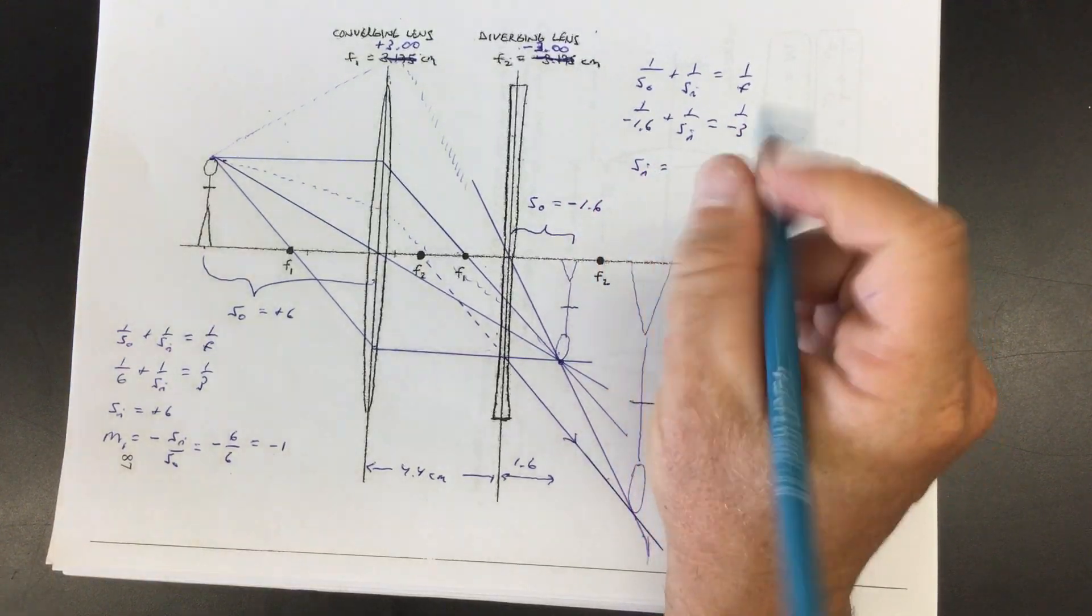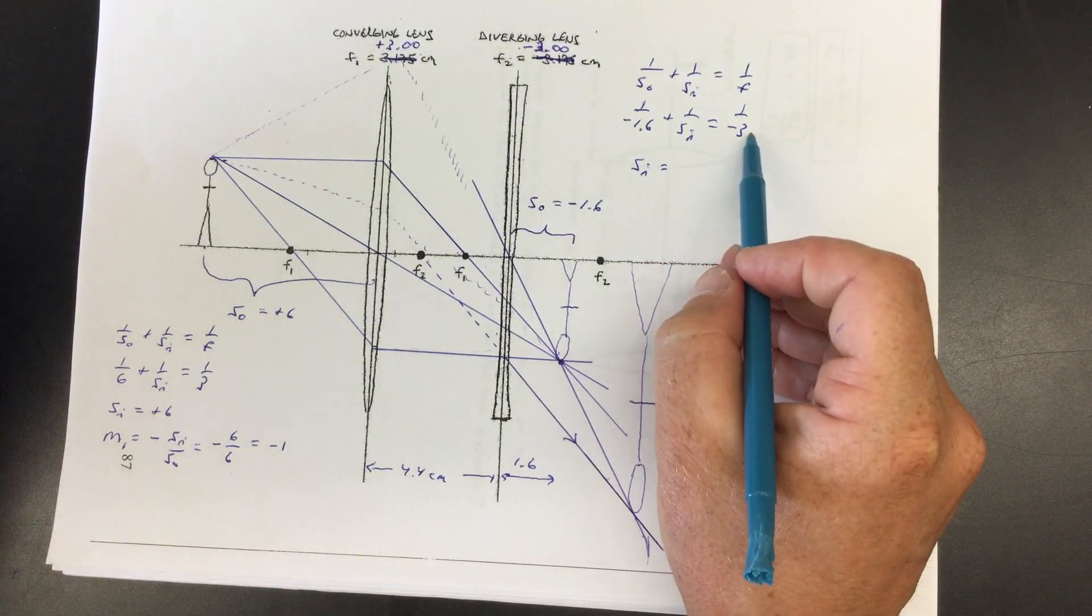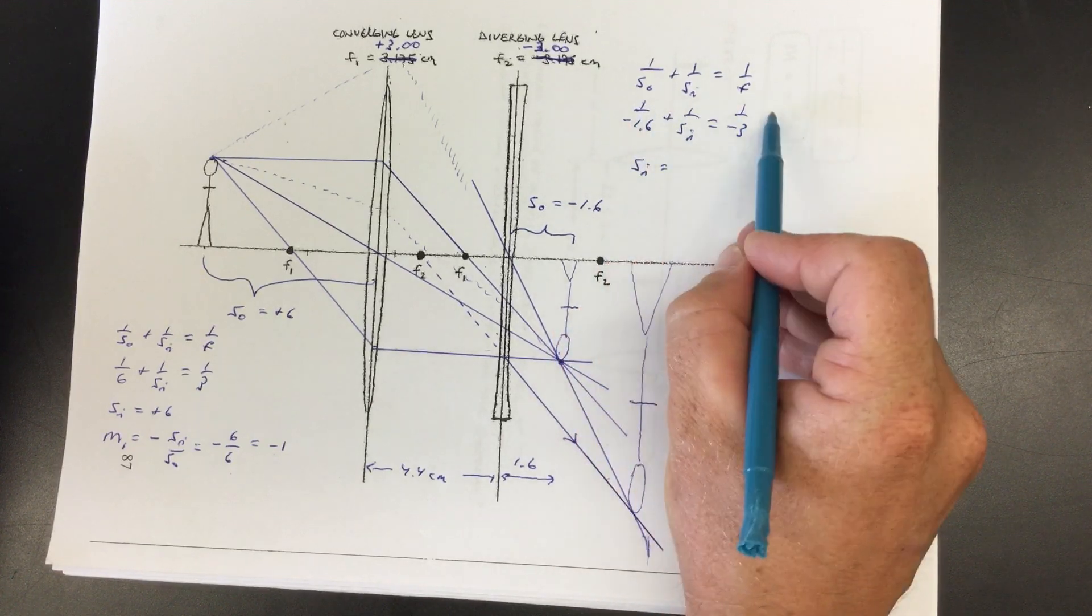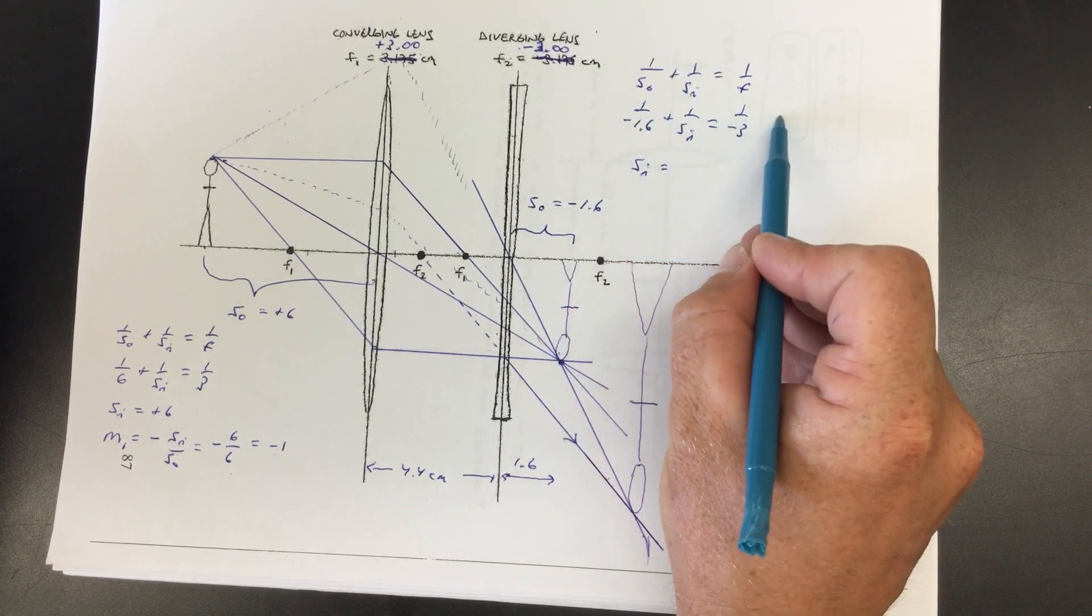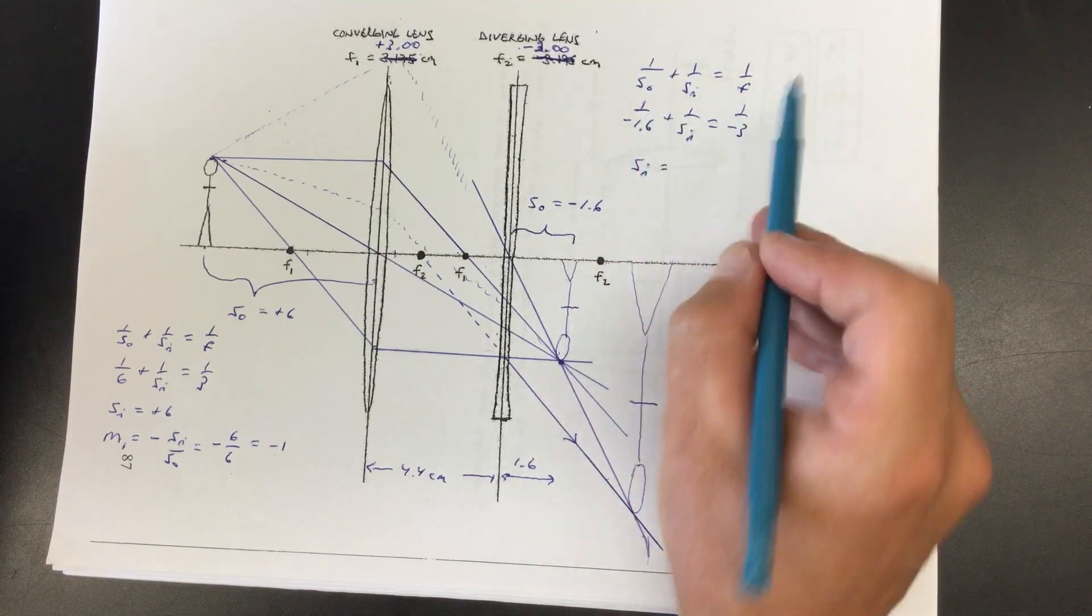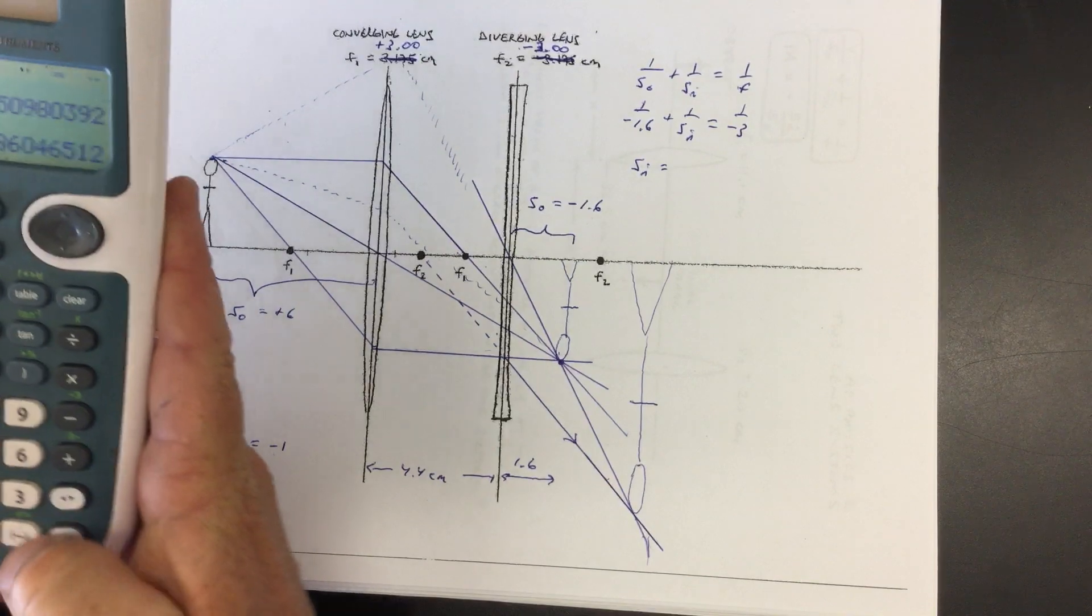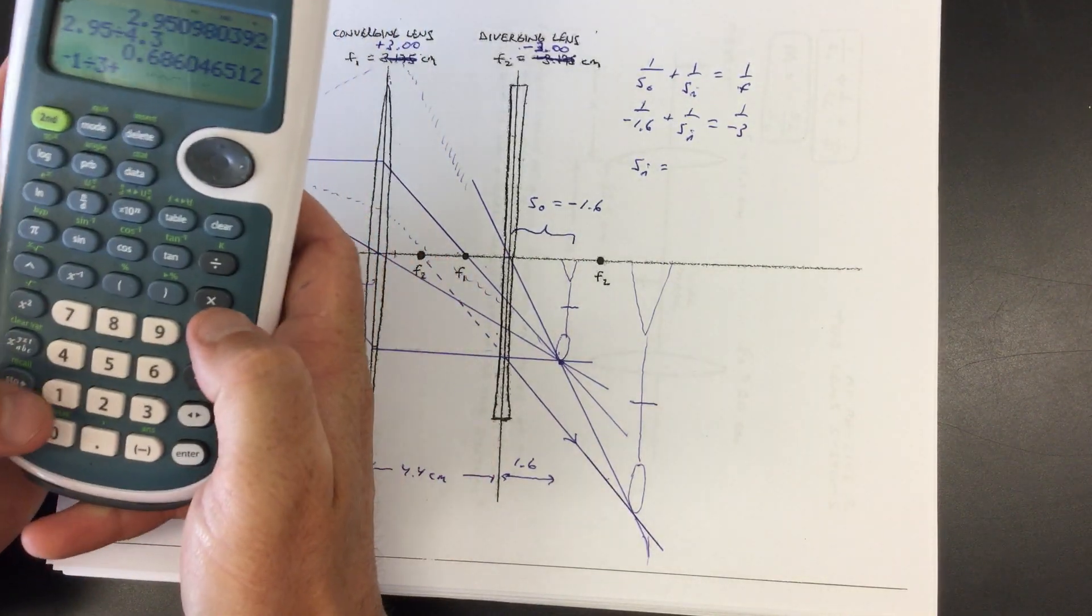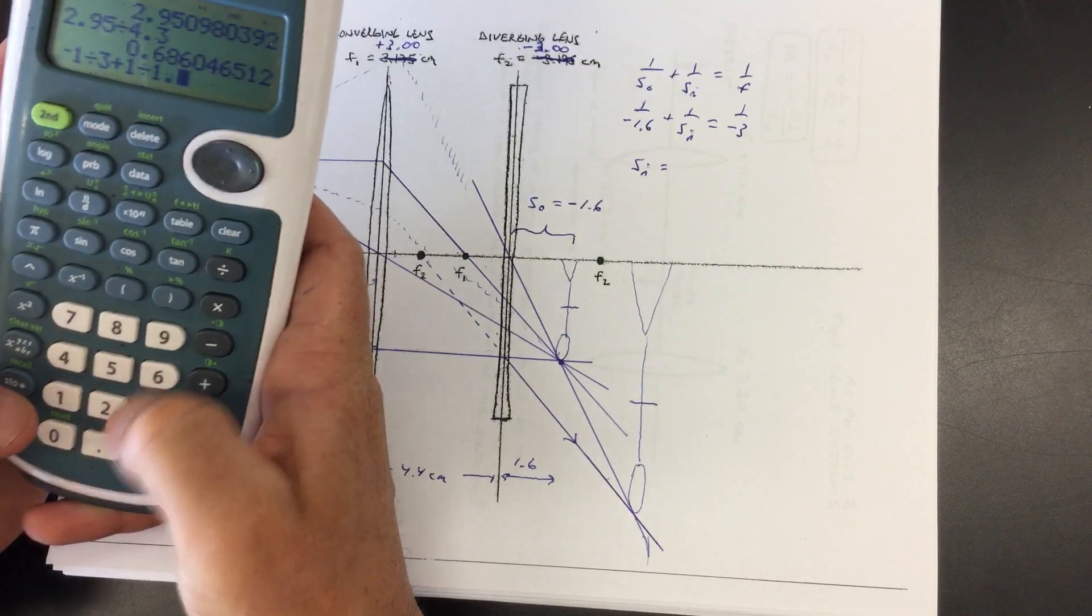SI equals what I would type in the calculator or what I will type is negative one third and then plus one over 1.6. Why plus? Cause I'm going to bring this guy over here algebraically. So it'd be minus one over three and then plus one over 1.6. So let's do that. Minus one divided by three plus one divided by 1.6.